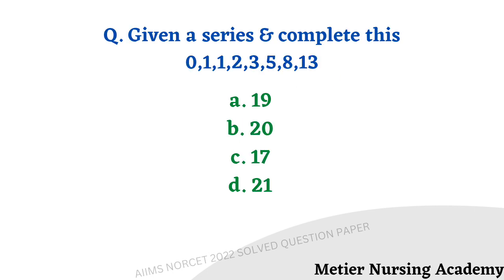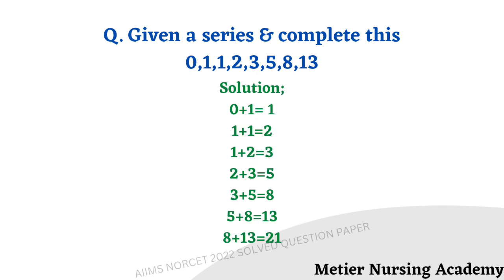Complete the series: 0, 1, 1, 2, 3, 5, 8, 13. What is the next number? Options: 19, 20, 17, and 21. The right answer is option D, 21. To solve this: add the first and second numbers (0+1=1), then second and third (1+1=2), then third and fourth (1+2=3), and so on. This is the Fibonacci sequence. Adding continuously after 13, the next number is 21.